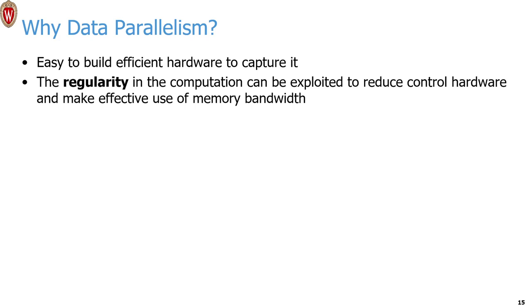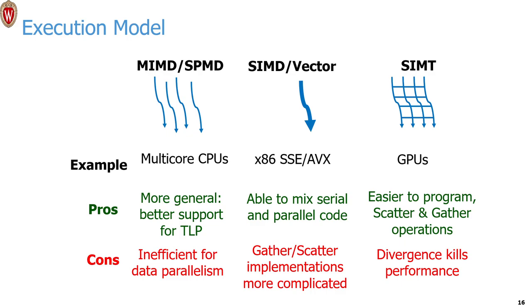GPUs are designed to exploit data-level parallelism, or DLP. Computation that uses this kind of parallelism tends to be very regular, which means we can reduce the logic needed for fetching, decoding, and branch control, and instead invest those resources in things like more memory bandwidth or more ALUs. The key point is that we only need to fetch and decode an instruction once across many threads, and then get different data for them in parallel.